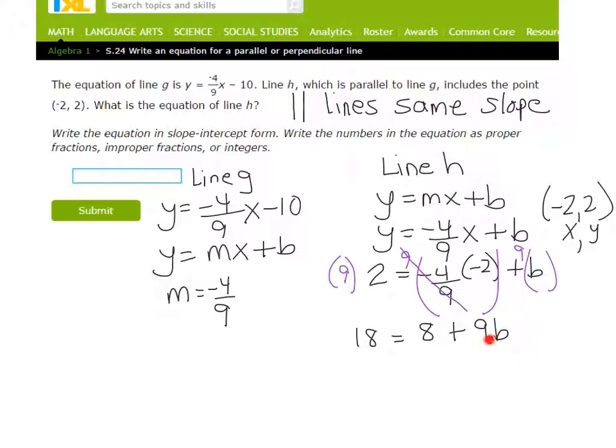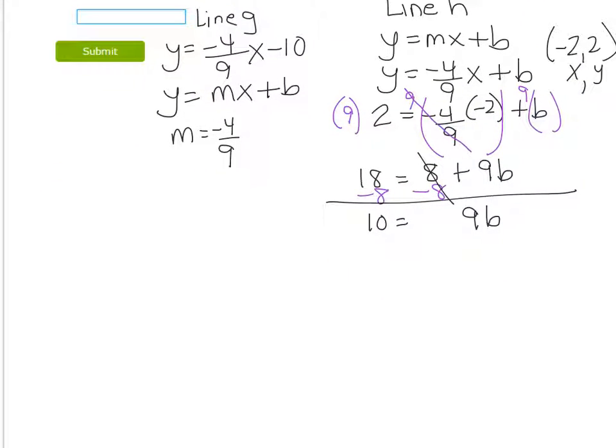We need to undo that division, or sorry, that addition first. So we've got 18 minus 8 is 10. Combined opposites reduces to 0. And we've got 9b over a positive 9b. I guess I didn't really need to put that plus sign. And we're going to undo that multiplication with division. And, of course, anything divided by itself reduces to 1. And so our y-intercept is 9, or sorry, 10 9ths.